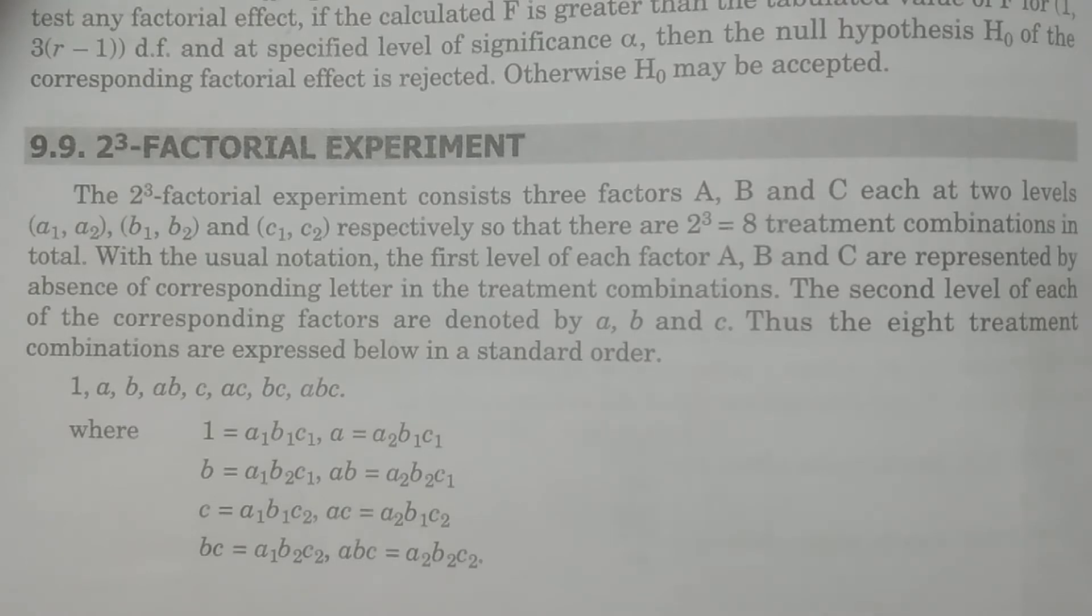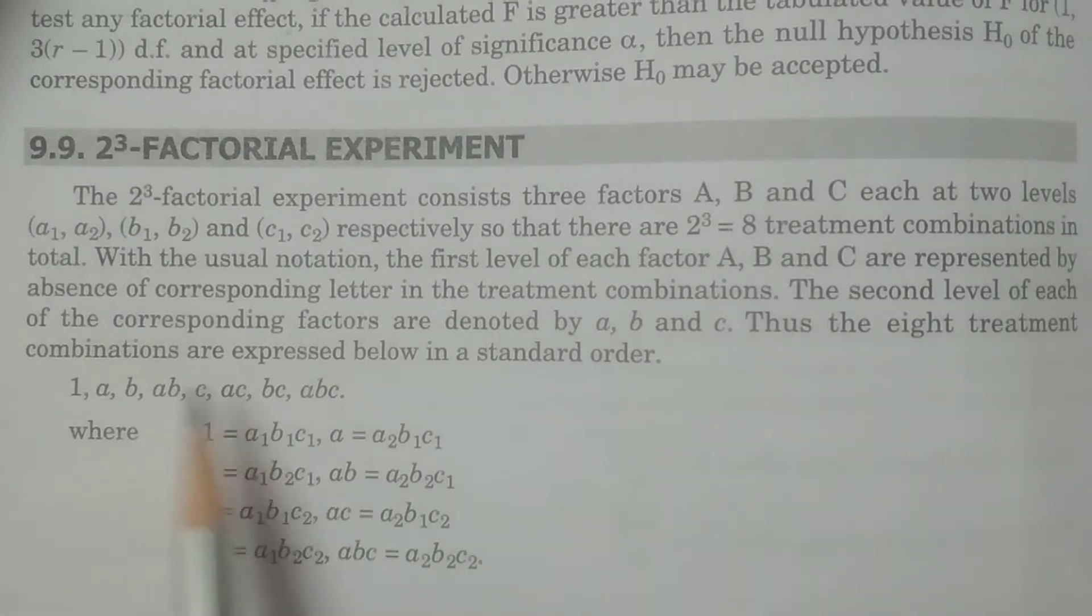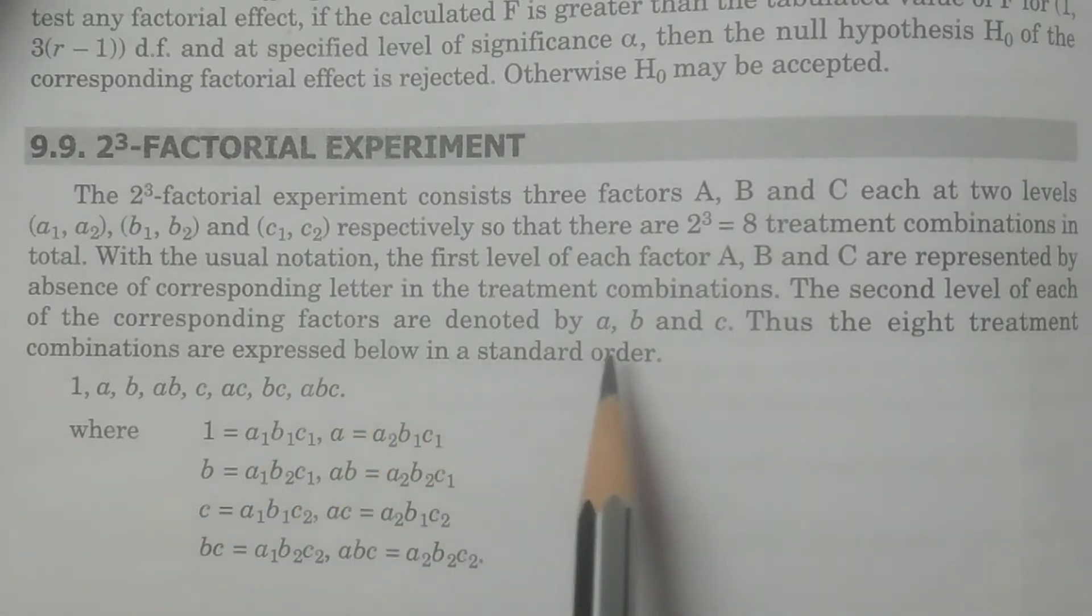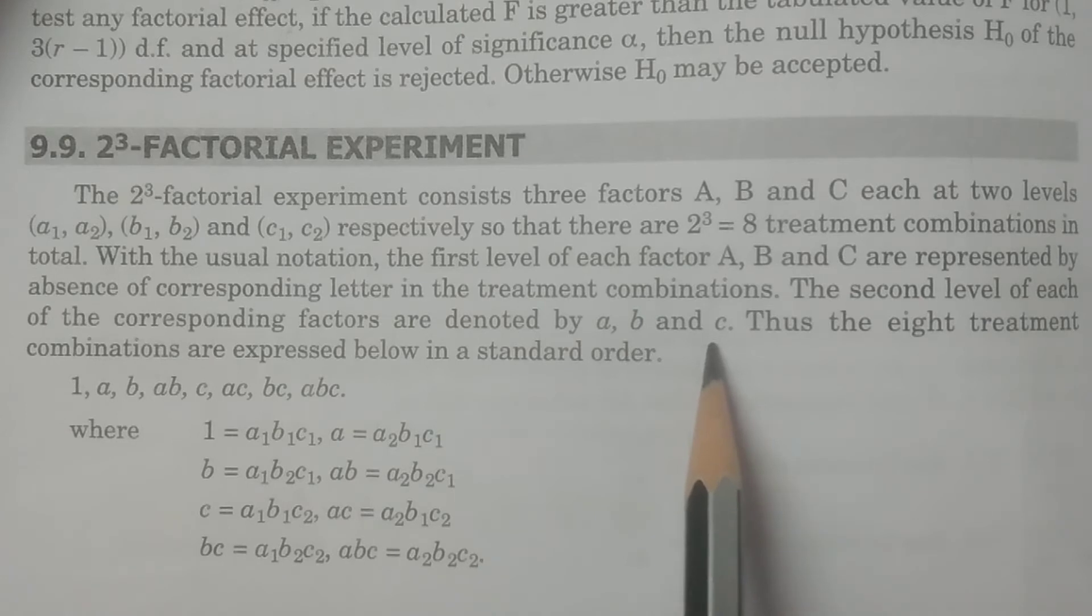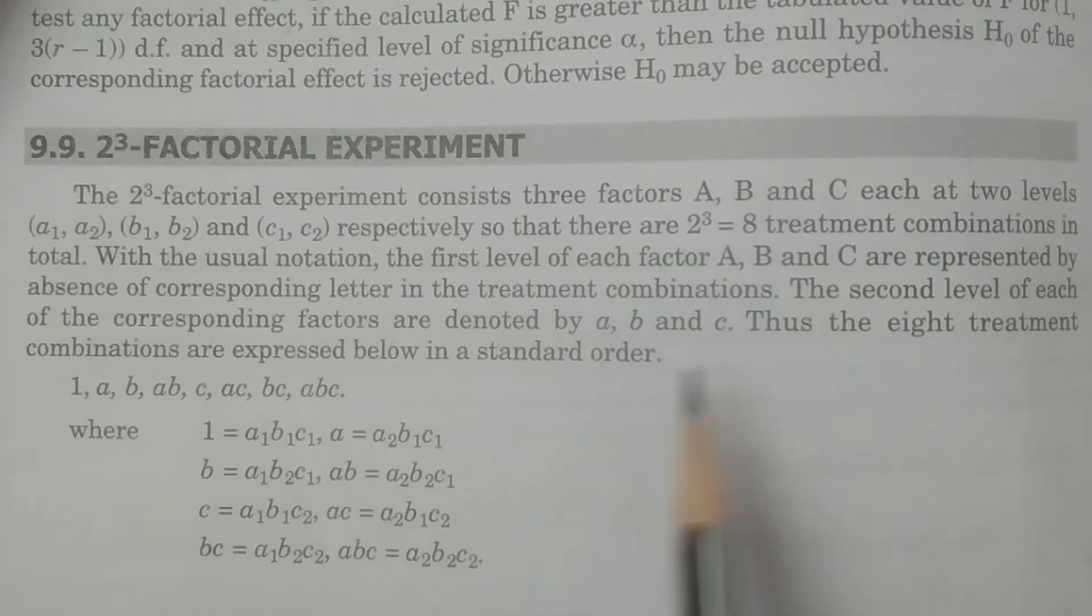The first level is always represented in the treatment combination as an absence. For example, A is at first level, A will not be there. B is at first level, B will not be there. Like that. This is as usual, we have specified in 2 square factorial experimental design. The second level of each of the corresponding factors are denoted by A, B and C.